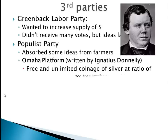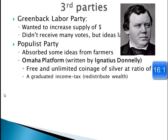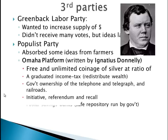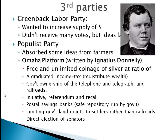The Populist Platform included: a free and unlimited coinage of silver at a ratio of 16 to 1 — meaning they'd increase the amount of silver to inflate the value of money; a graduated income tax, meaning the more money you make the more you pay — we'll see the 16th Amendment; government ownership of telephone, telegraph, and railroads; initiative, referendum, and recall — giving more political power to people; postal savings banks — a safe place to put money run by the government; limiting government land grants to settlers rather than railroads; indirect election of senators — the 17th Amendment; and an eight-hour workday.